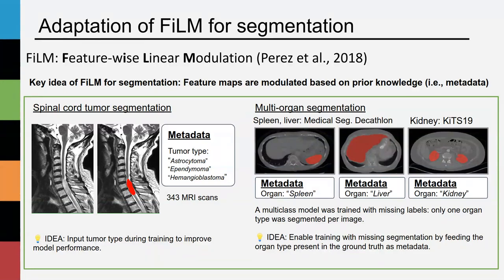For the second use case, we wanted to train a multi-organ segmentation model using datasets from different sources. Spleen and liver segmentations were taken from the Medical Segmentation Decathlon dataset, while kidney segmentations were taken from the KITS19 dataset. Each image has a single organ segmented. If the model were trained simply on the ground truth, the learning would be hampered as there are missing labels in the context of multi-organ segmentation. For example, if the model predicts a segmentation mask where the kidney, liver, and spleen are segmented, but the ground truth contains only a liver segmentation, the model will be penalized for over-segmenting since the spleen and kidneys are not in the ground truth.